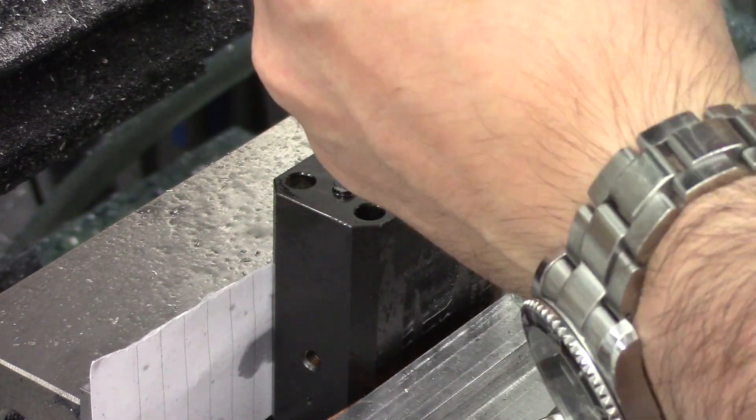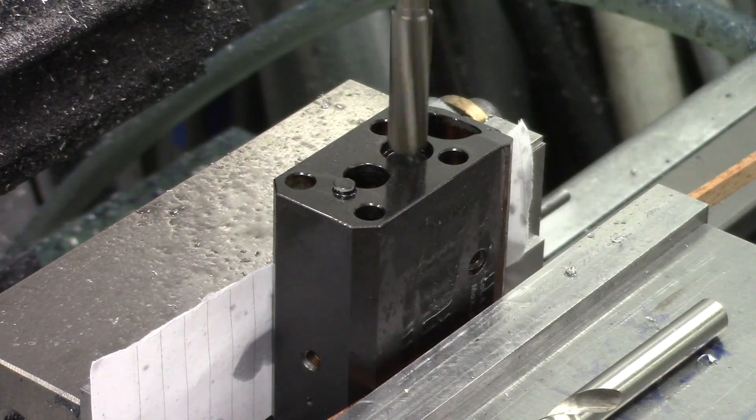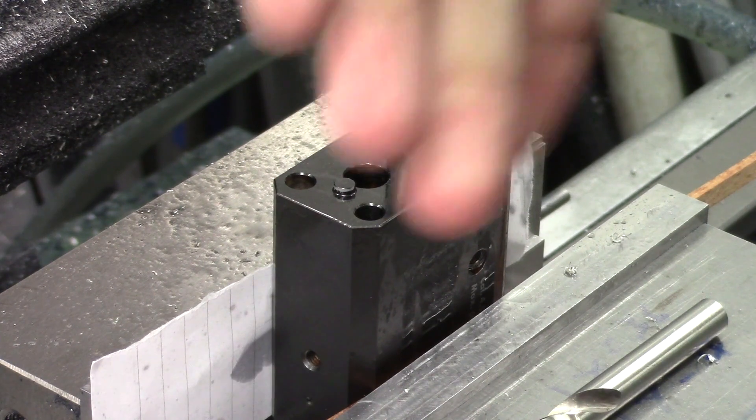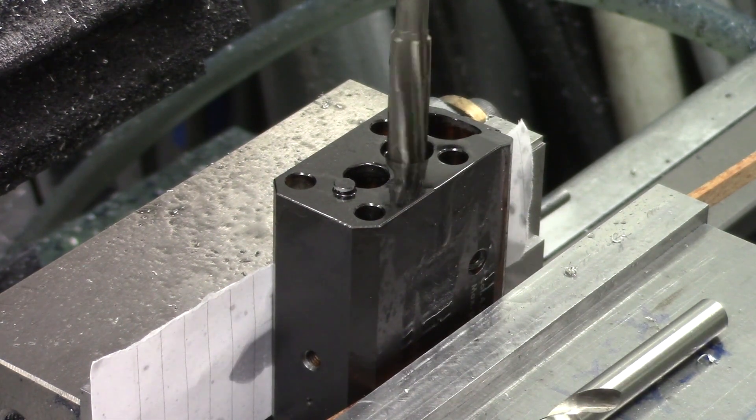So the first size drill bit was just to remove most of the bulk material. The original hole, as I said earlier, is 8mm and we just went through with a 9mm drill bit.